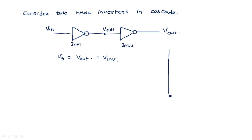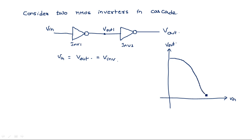If you draw the transfer characteristic curve of this NMOS inverter, with input on one axis and output on the other, the curve exists between VDD and zero. There is a particular point on this curve where V-output equals V-input, known as V-inverter. We are going to find the ZPU by ZPD characteristics at this particular point where input equals output equals V-inverter.